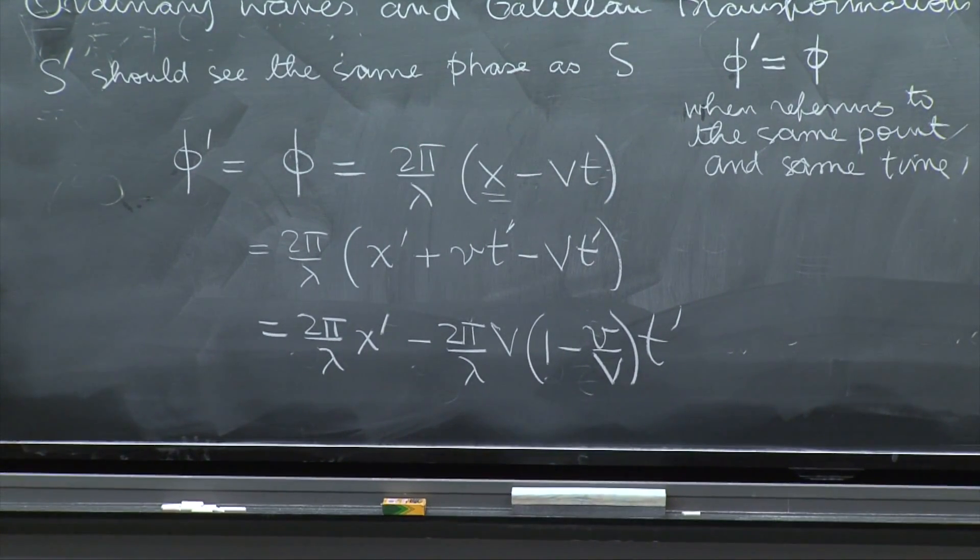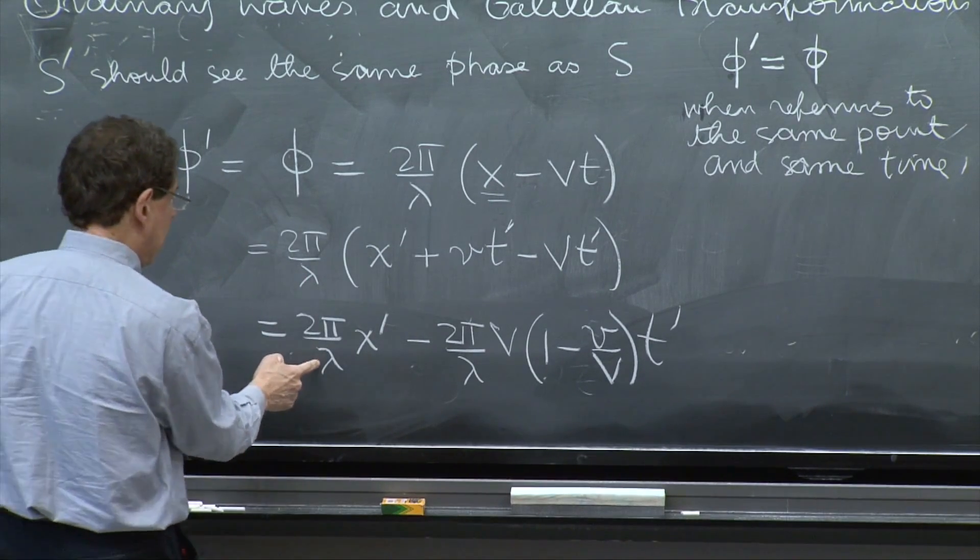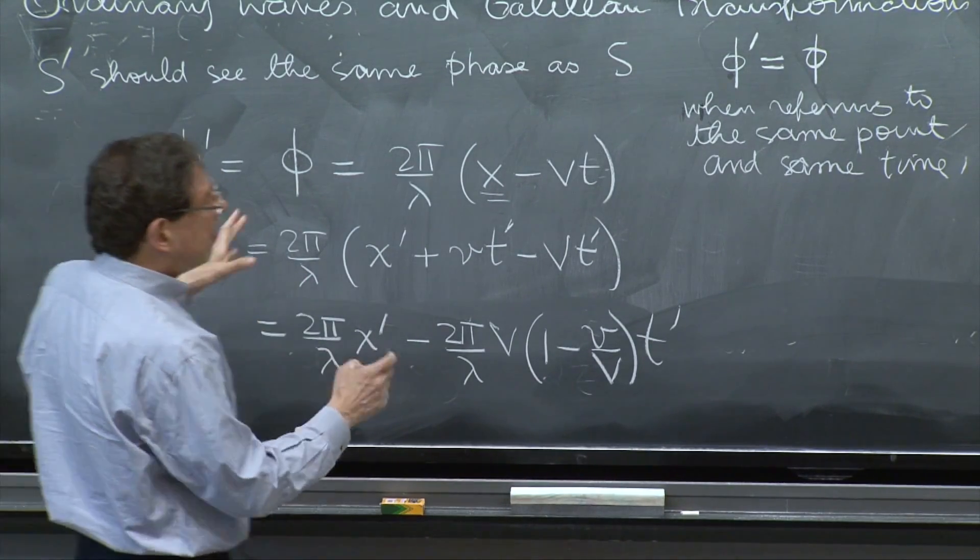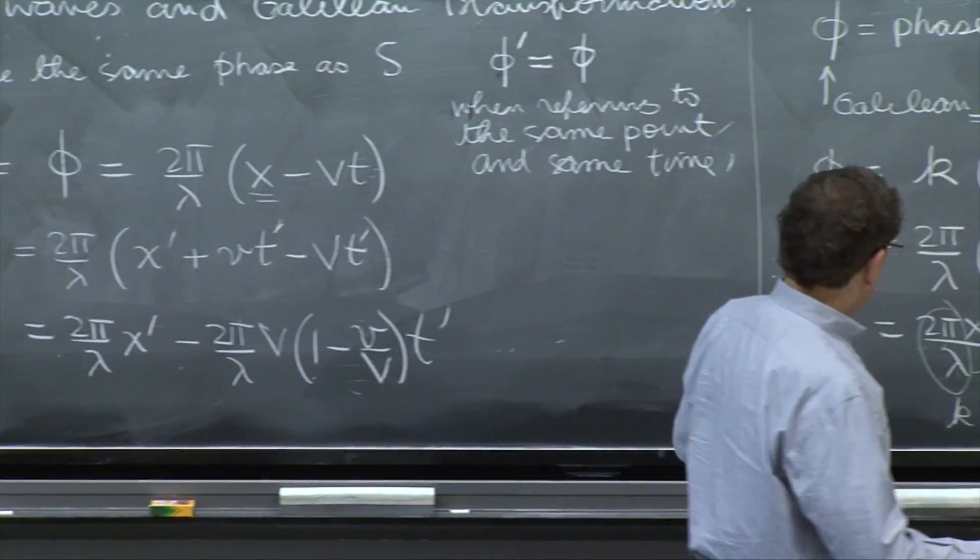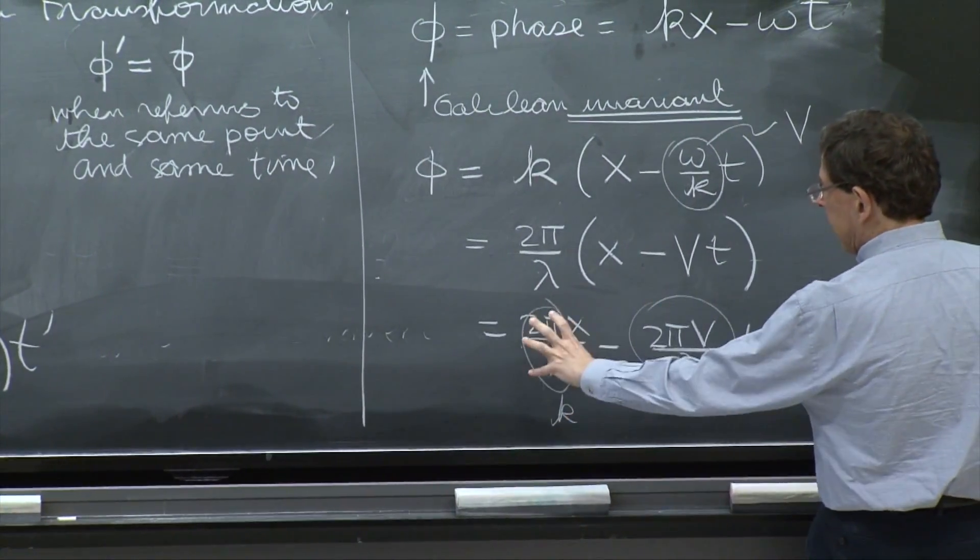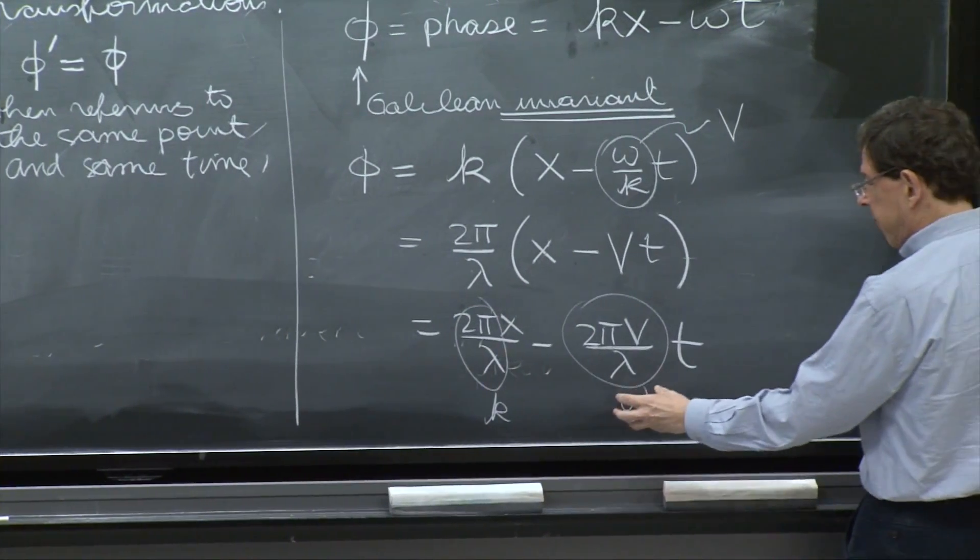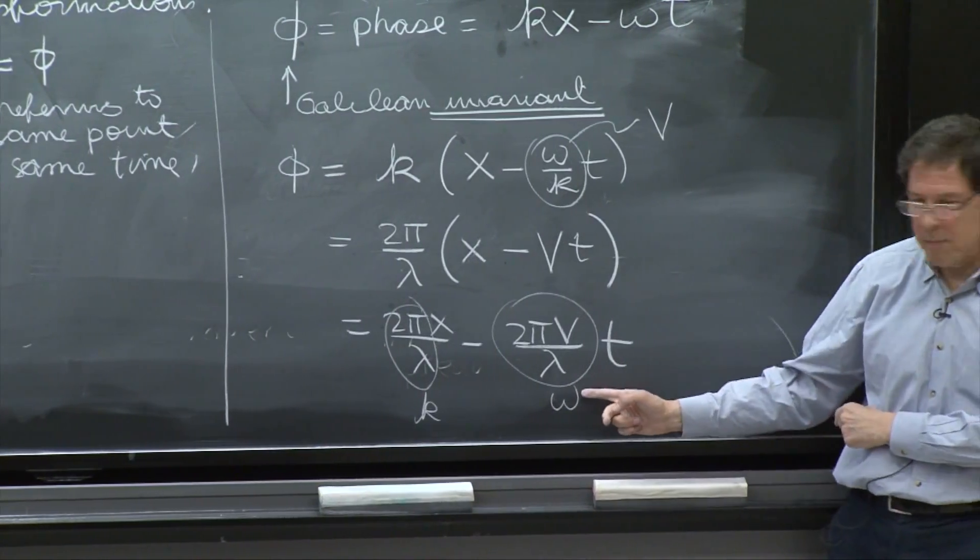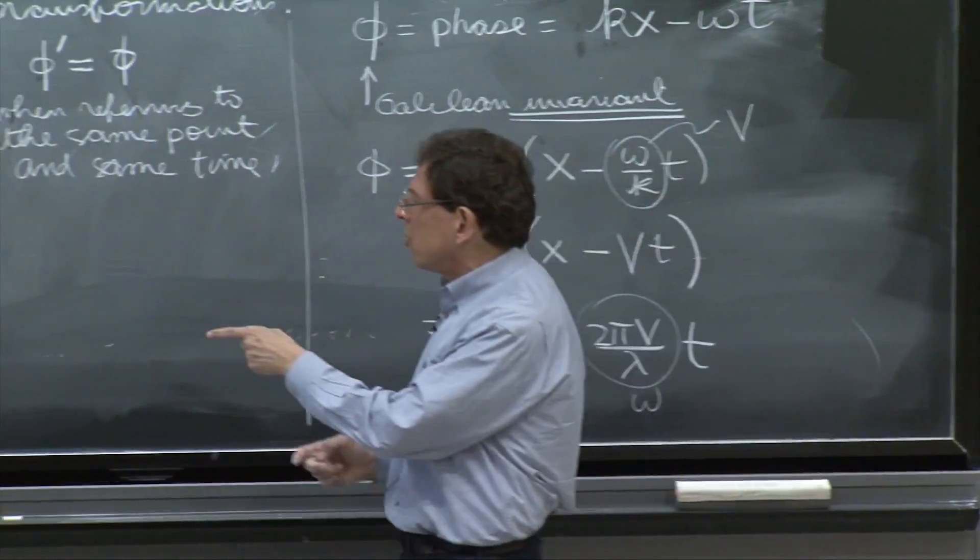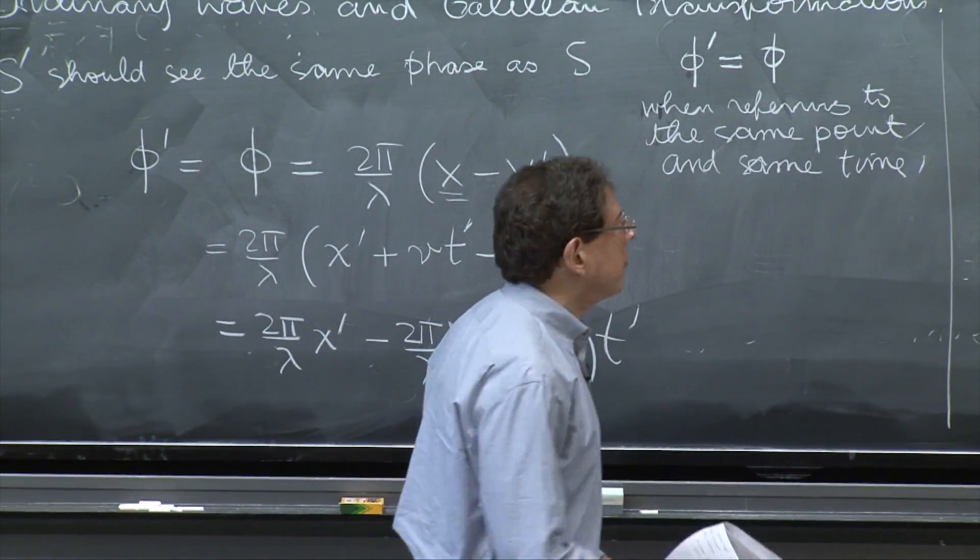So that is the phase. And therefore, we look at this phase and see, oh, whenever we have a wave, we can read the wave number by looking at the factor multiplying x. And we can read the frequency by looking at the factor multiplying t. So you can do the same thing in this case.